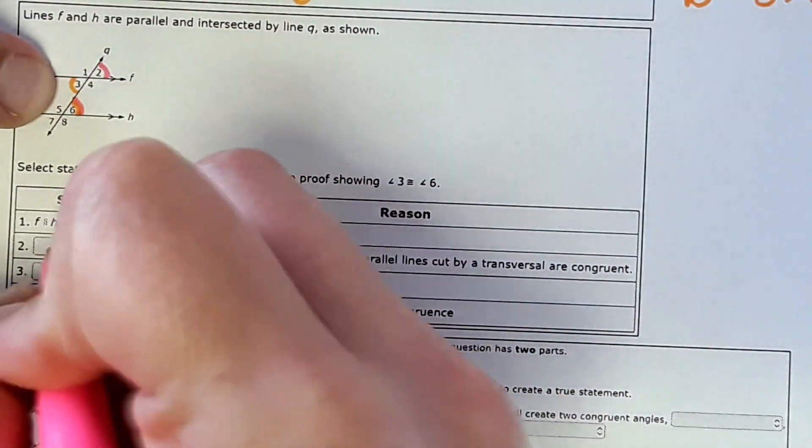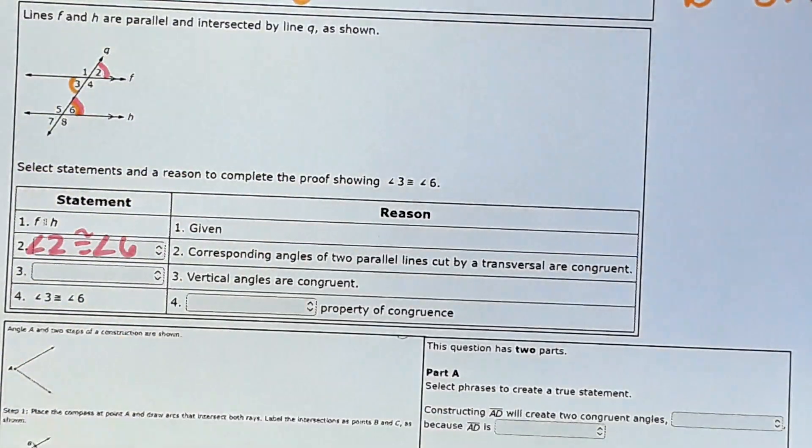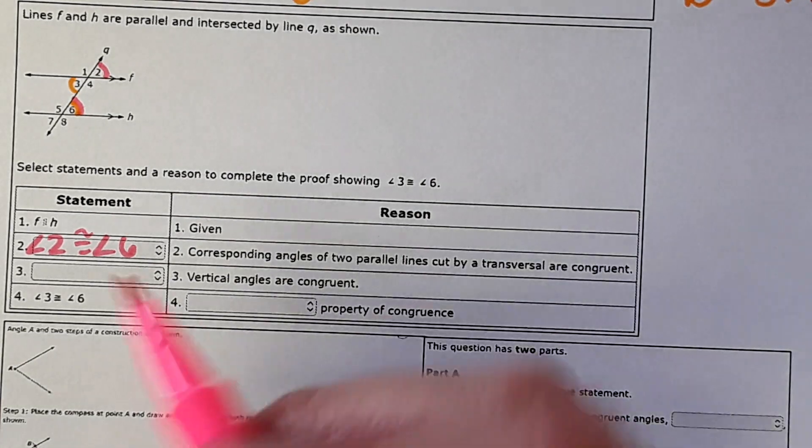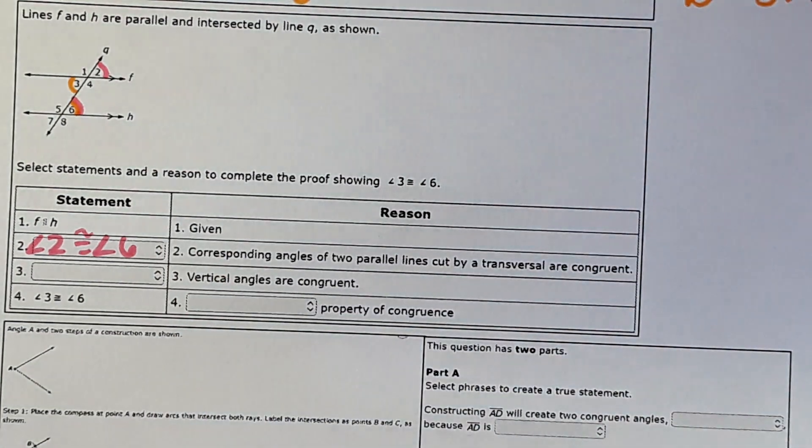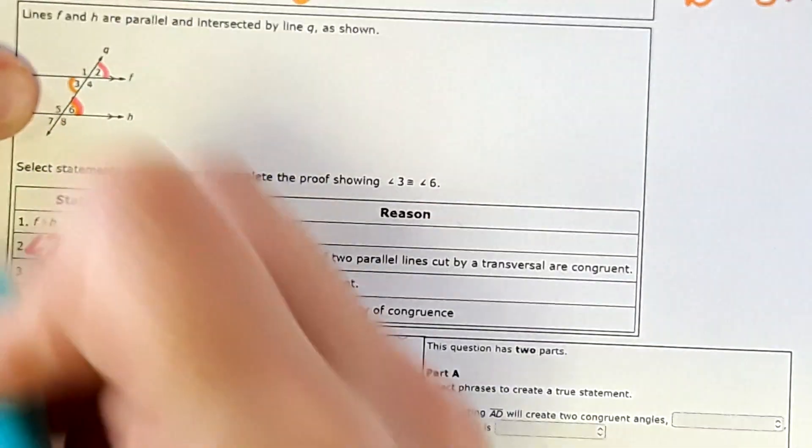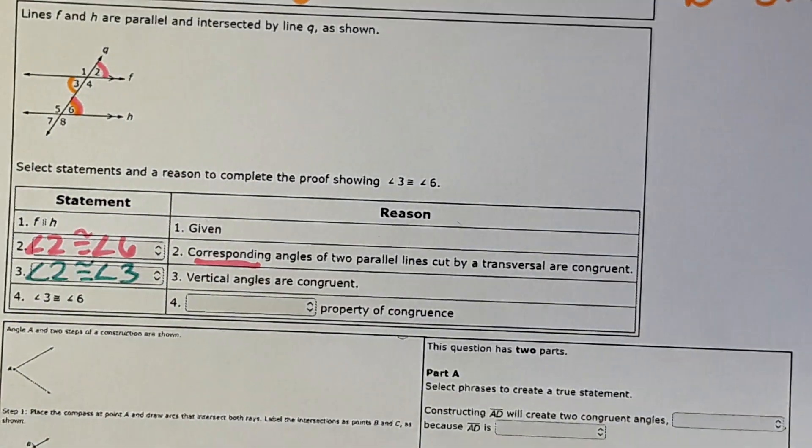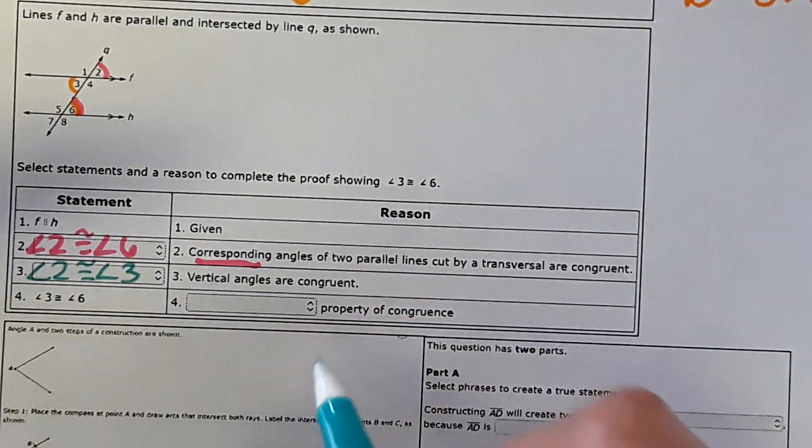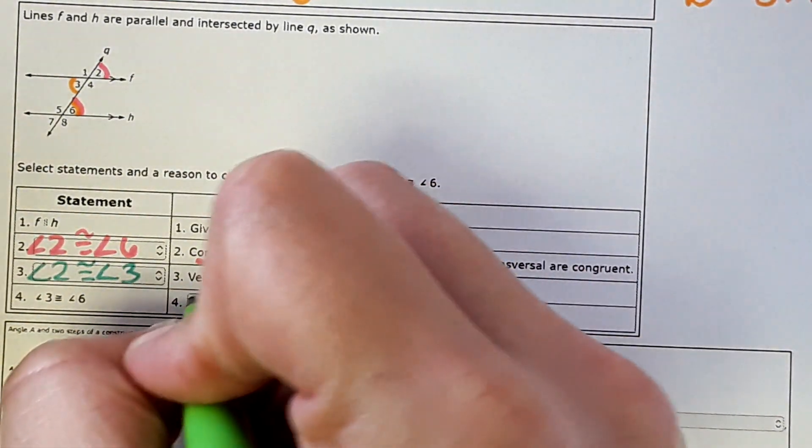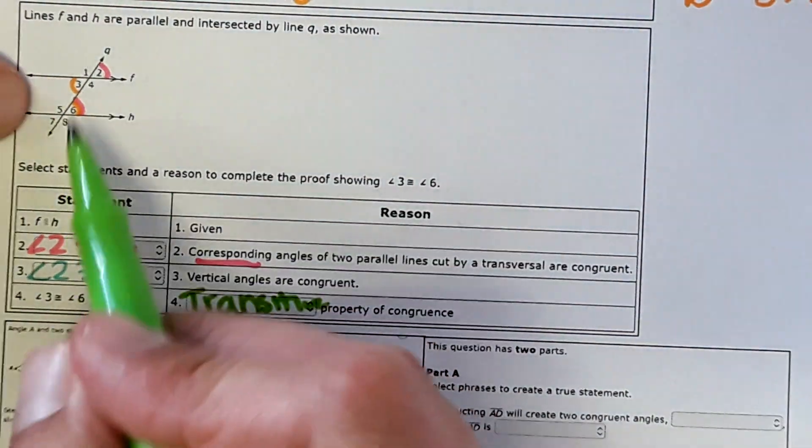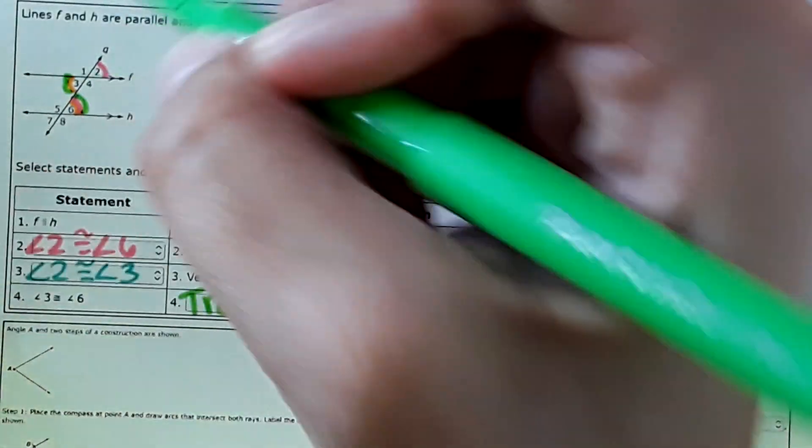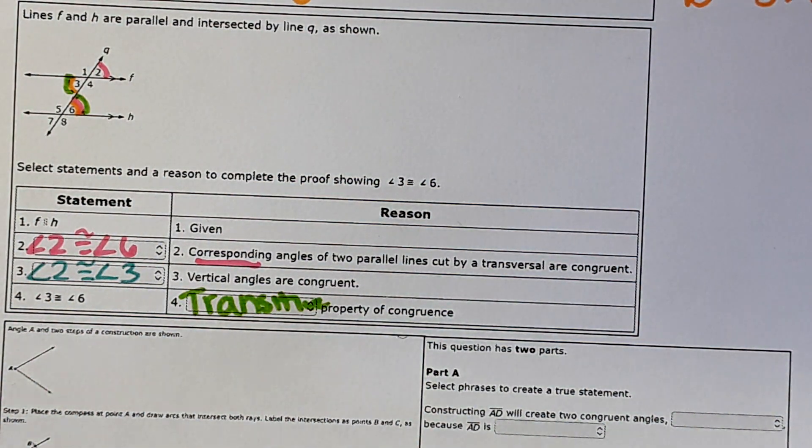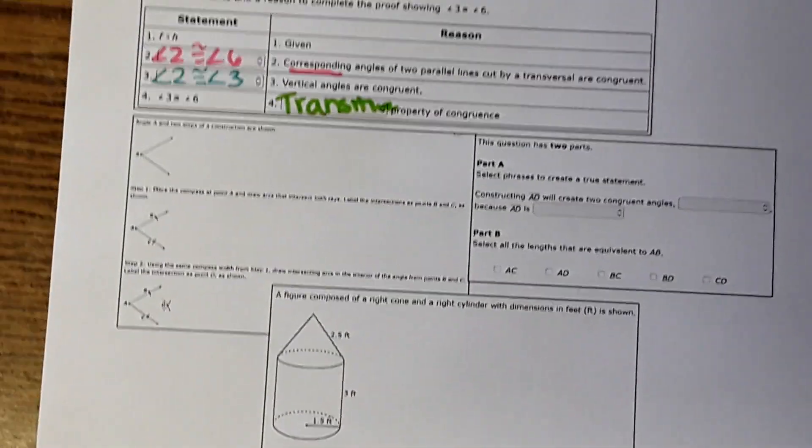We're looking for corresponding angles that are congruent. Angle 2 and angle 6 are corresponding angles that are congruent. Next, vertical angles are congruent. The vertical angles I have here are 2 and 3, so angle 2 is congruent to angle 3. Then it says that 3 and 6 are congruent by blank property of congruence. That would be the transitive property. Now that 2 is equal to 6 and 3 is equal to 2, then we can say that 3 is equal to 6 because of the transitive property.